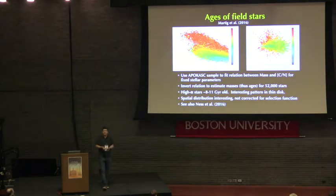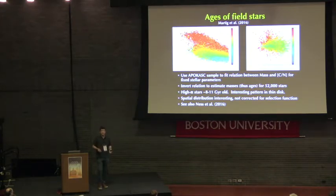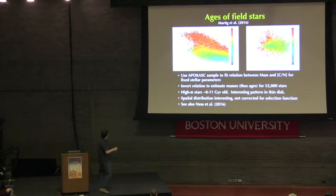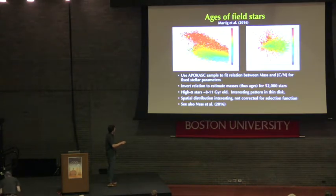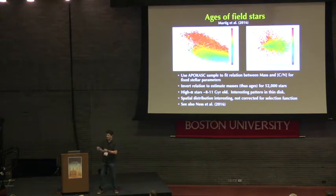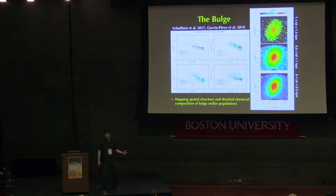We have a sample of stars from the Kepler field for which we know the masses because they are asteroseismological targets — we know the masses and the ages. We fit the relationship between age and carbon over nitrogen, apply that relation to a very large sample of 52,000 Milky Way stars, and the plot is beautiful: you see that the thick disk high-alpha stars really are older. There is an interesting age-metallicity relationship in the thin disk. This plot shows the distribution of stars in the galactic plane and the Z against galactic radius plane, which is heavily biased by the APOGEE selection function.